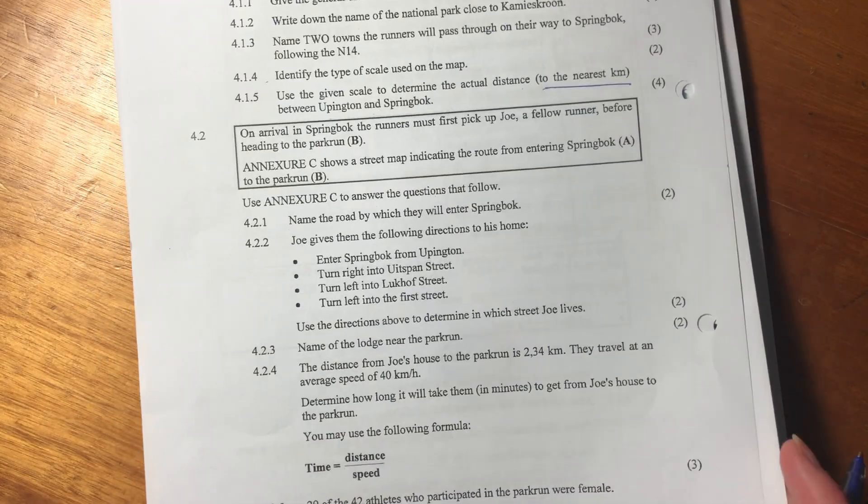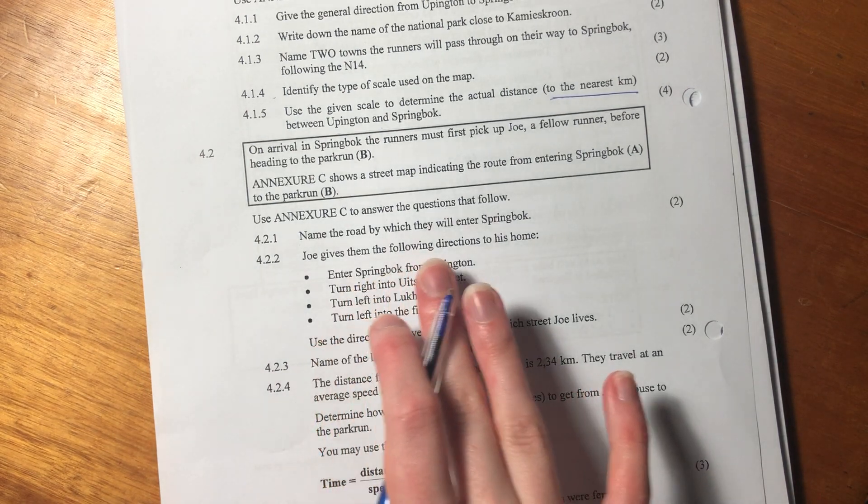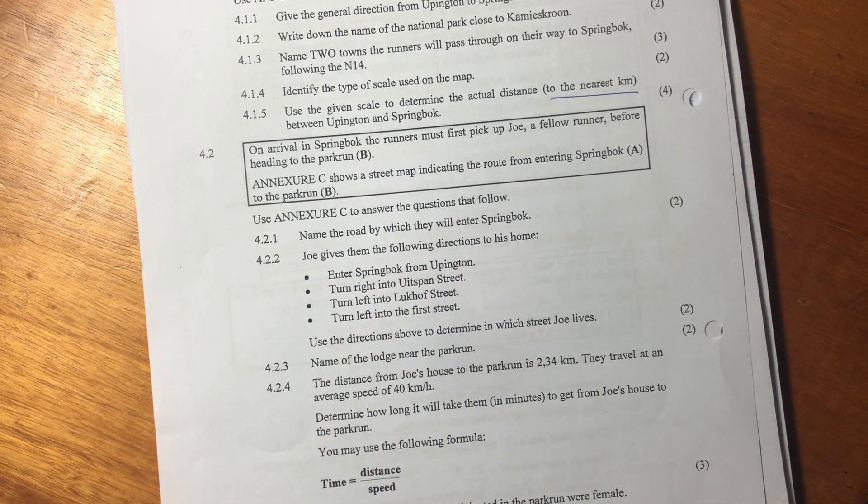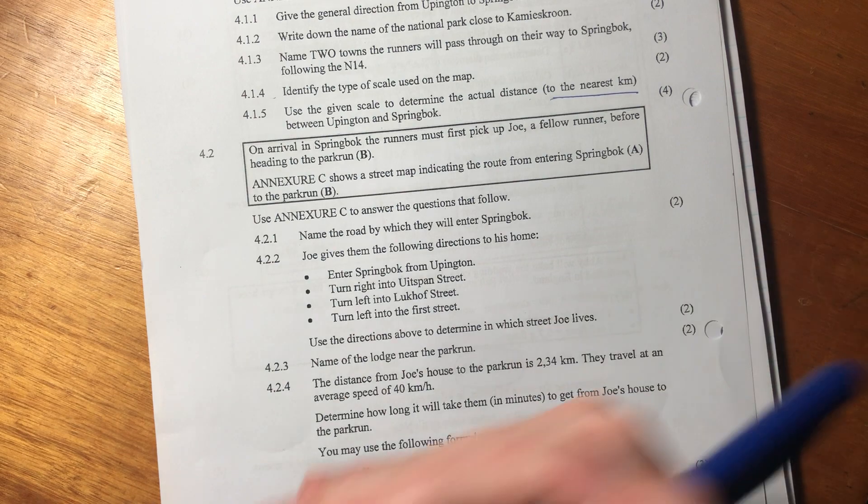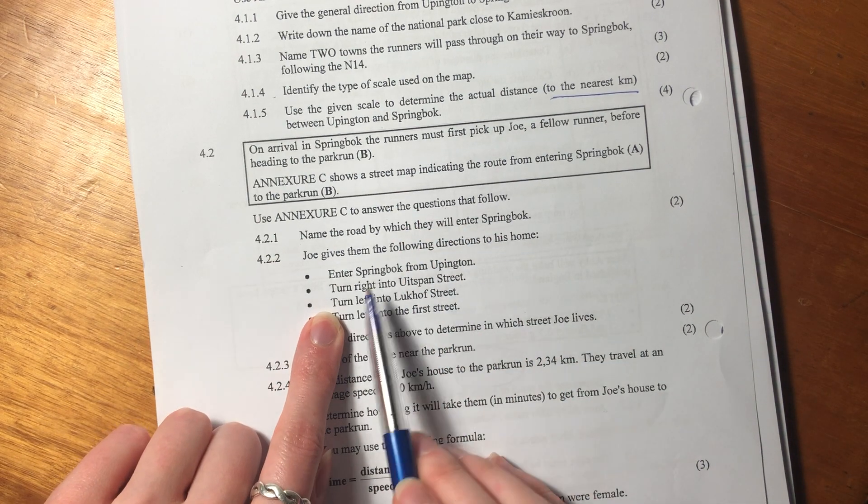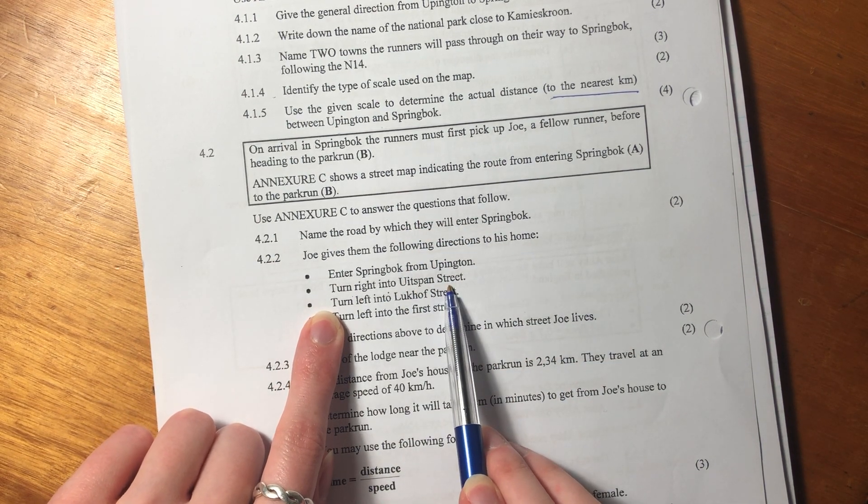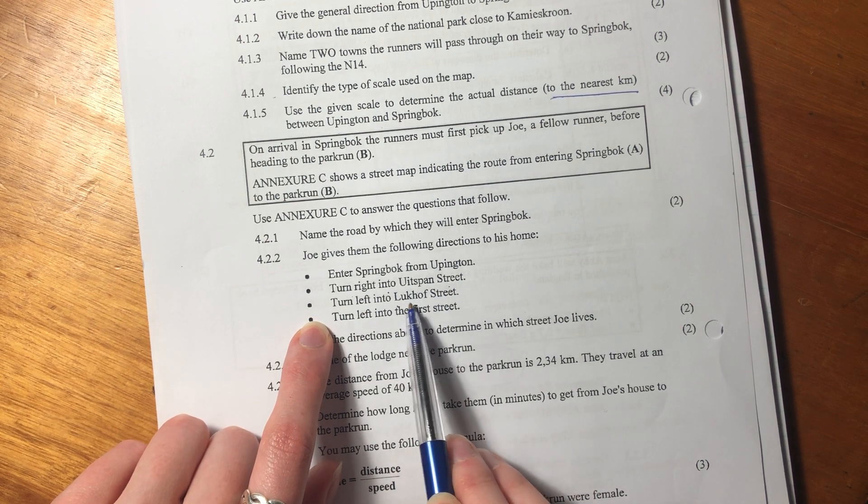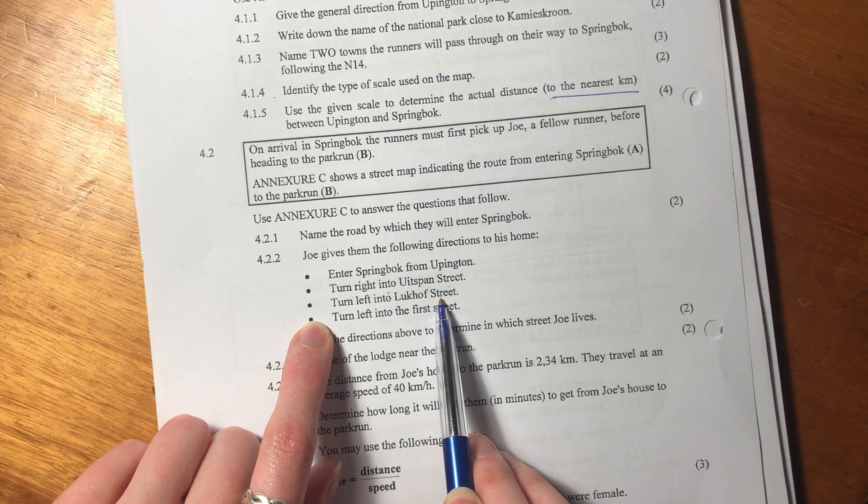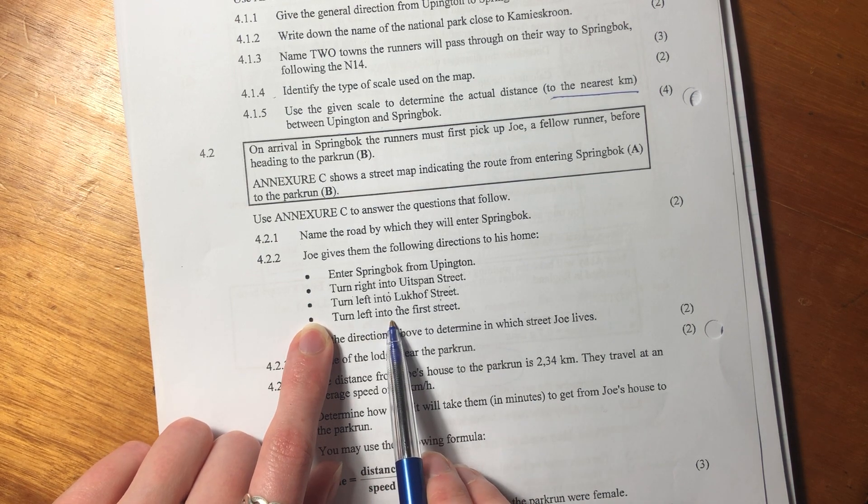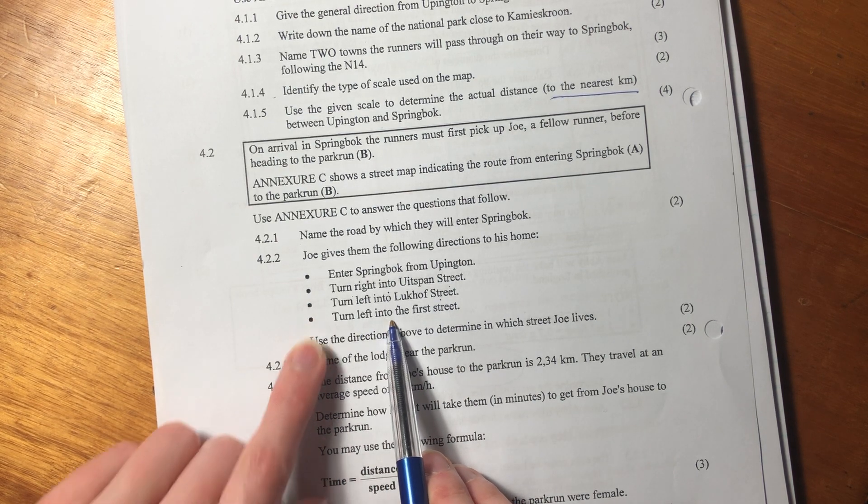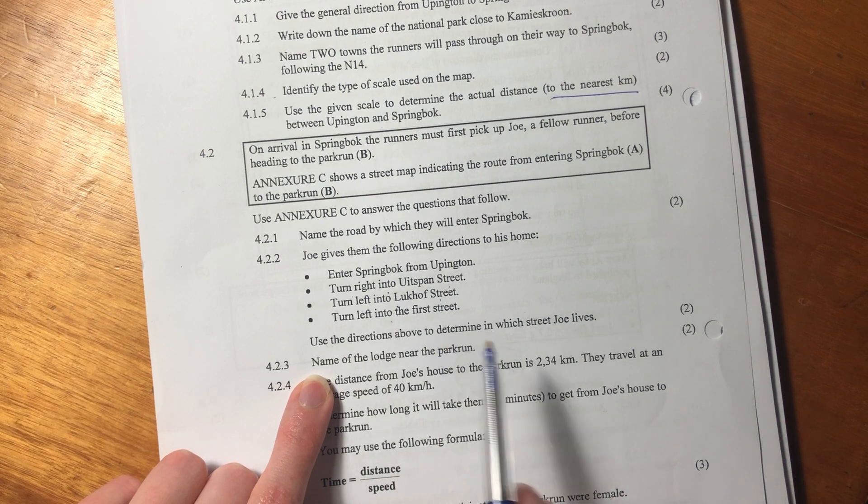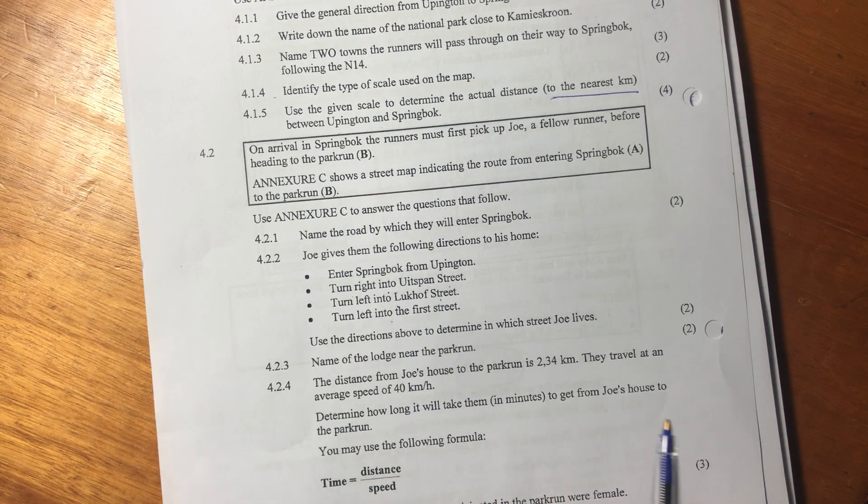Now, it says, Joe gives them the following directions to his home. Into Springbok from Uppington. That's what they've done, where they are at A. Turn right into Eitspan Street. Then it says, turn left into Likhof Street. Then it says, turn left into the first street. Use directions above to determine in which street Joe lives.